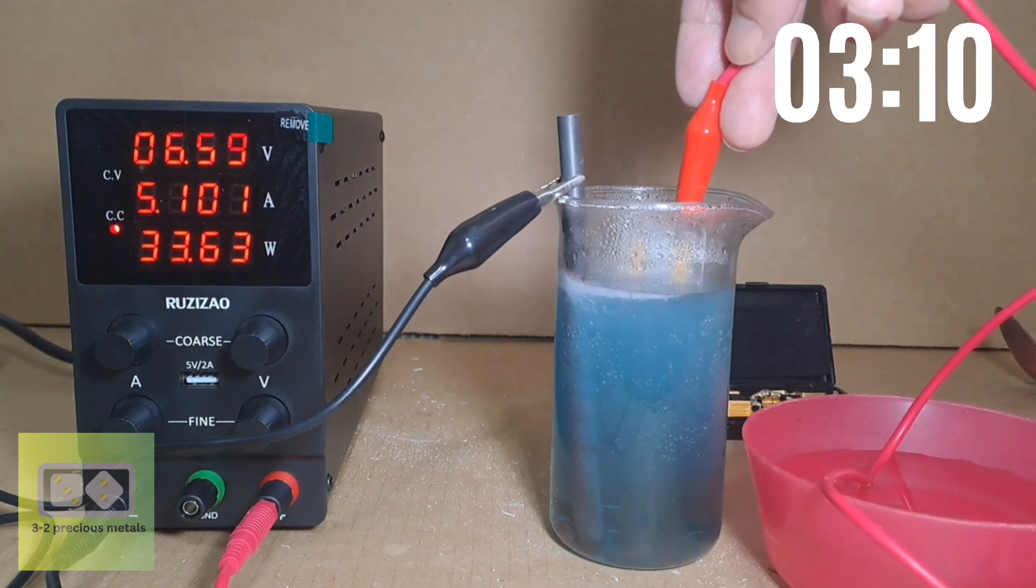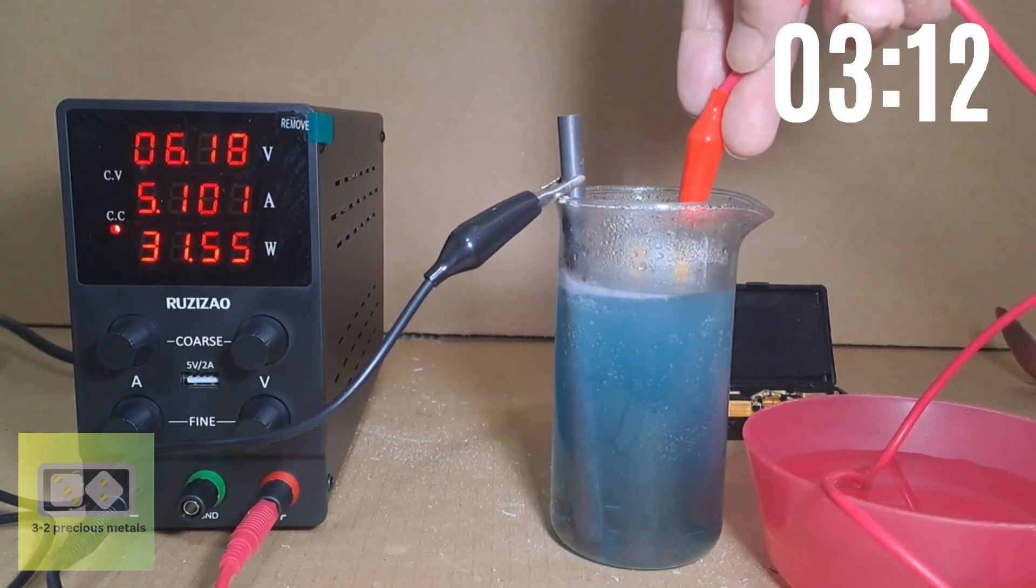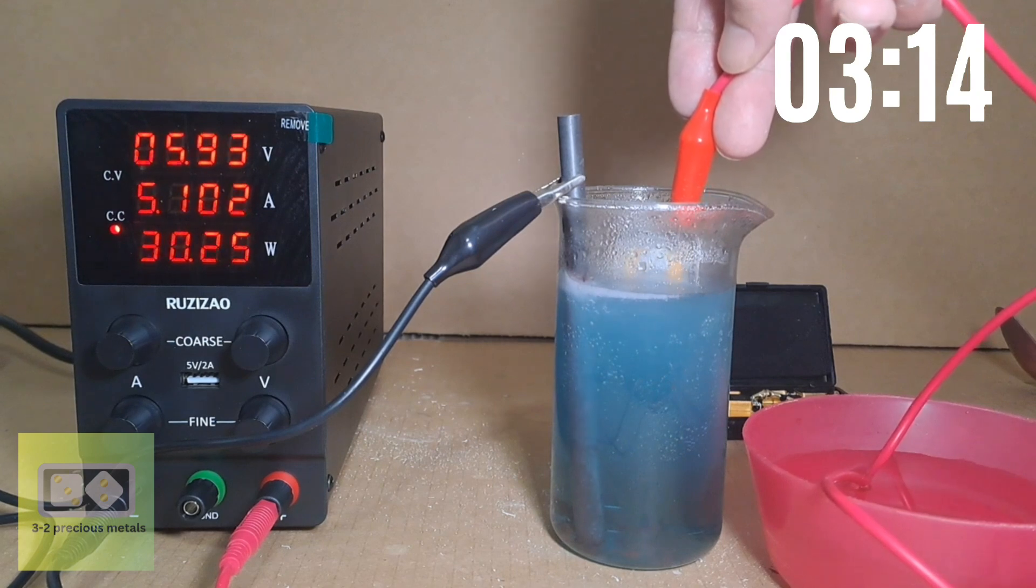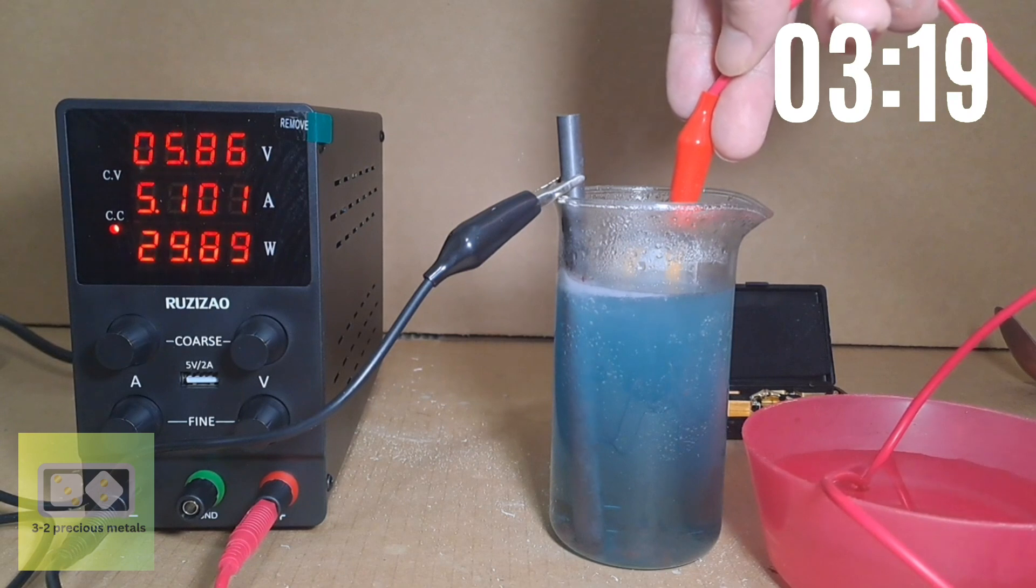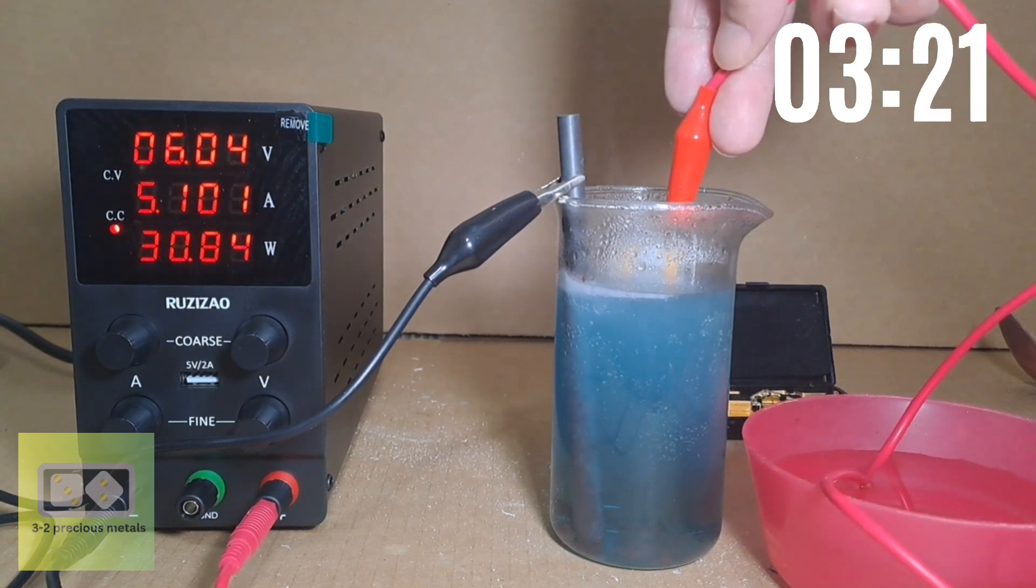Because of this, when reverse electroplating computer components, the most common electrolyte used is concentrated sulfuric acid. Copper is quite resistant to concentrated sulfuric acid.